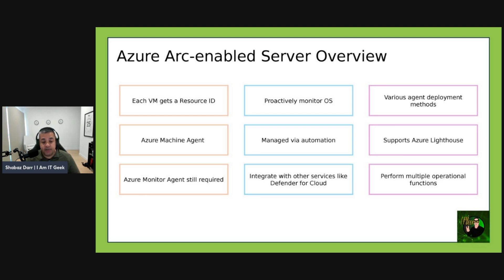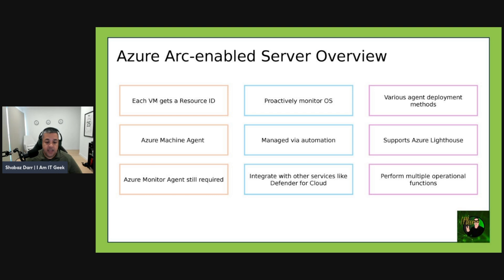To connect machines to Azure, you install the Azure connected machine agent on each machine. This agent does not replace the Azure Monitor Agent. The Azure Monitor Agent for Windows and Linux is required in order to proactively monitor the OS and the workloads running on the machine, and to manage them using automation runbooks or solutions like Update Management, and to use other Azure services like Microsoft Defender for Cloud.